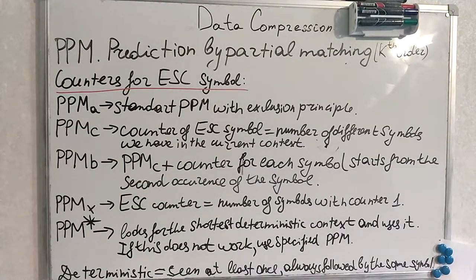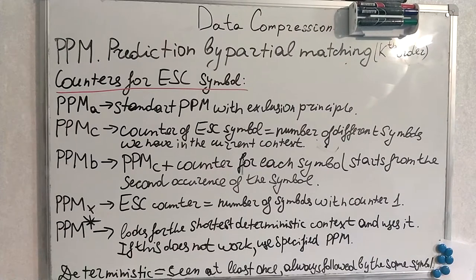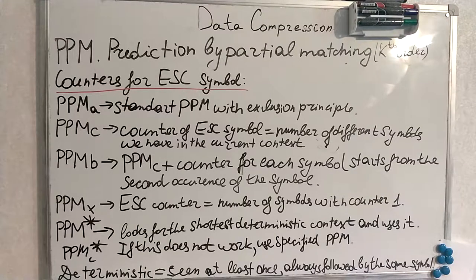PPM B is just like PPM C but the counter for each symbol starts from the second occurrence of the symbol. PPM X's escape counter equals the number of symbols with counter one. PPM with star looks for the shortest deterministic context and uses it; if that doesn't work, it falls back to a specified version of PPM — for example, PPM C*. A deterministic context is one that has been seen at least once and has always been followed by the same symbol.